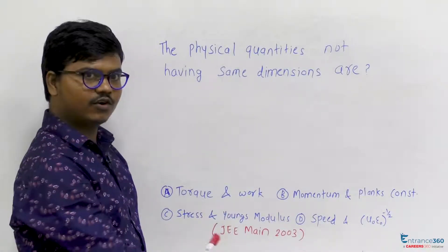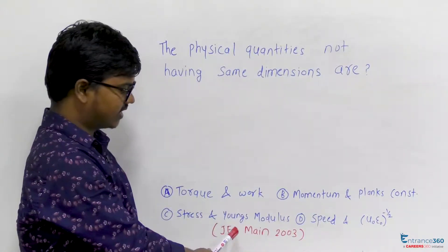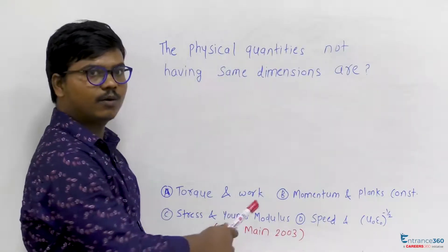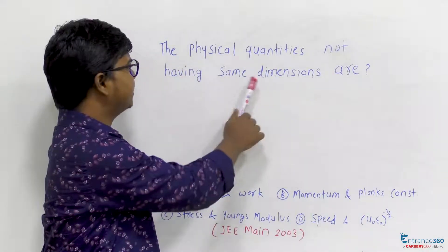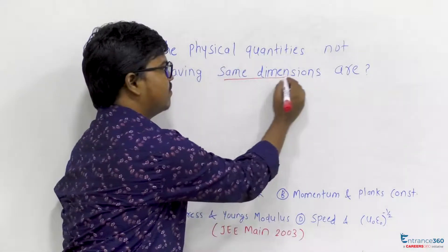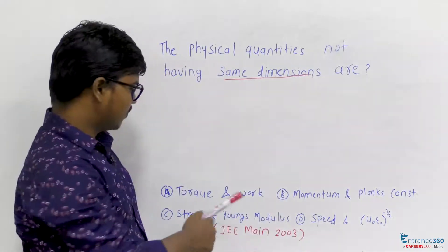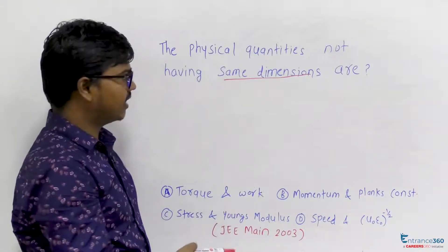Hello students, here we're going to discuss a question from JEE Main 2003 from the chapter physics and measurement. The question asks which physical quantities do not have the same dimensions. We want to find out which quantities do not have same dimension.